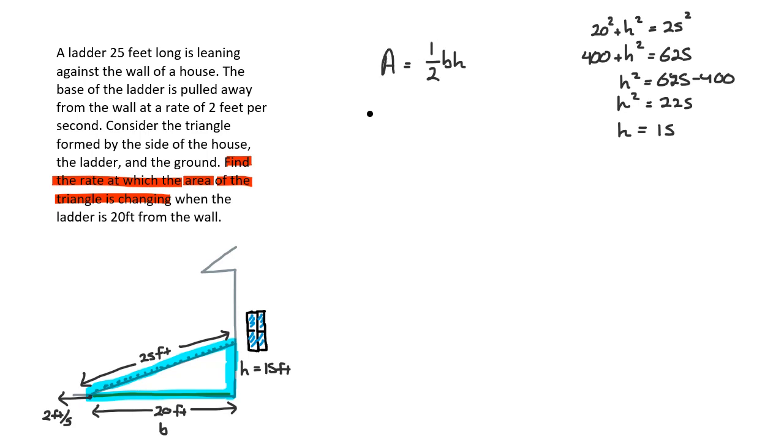Again, we have the derivative of A, which will just be dA/dt, a constant, which I will keep out here, and inside that bracket we encounter two functions in terms of t, or at least implied to be in terms of t, multiplied together, so we will apply the product rule. That will be the left function times the derivative of the right function plus the right function times the derivative of the left function.